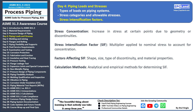The stress intensification factor (SIF) is a multiplier used to account for stress concentration. It is applied to the nominal stress to determine the actual stress at the point of concentration. The SIF depends on factors like the shape, size, type of discontinuity, and material properties. A sharp change in geometry or a sudden alteration in pipe size can lead to a higher SIF.